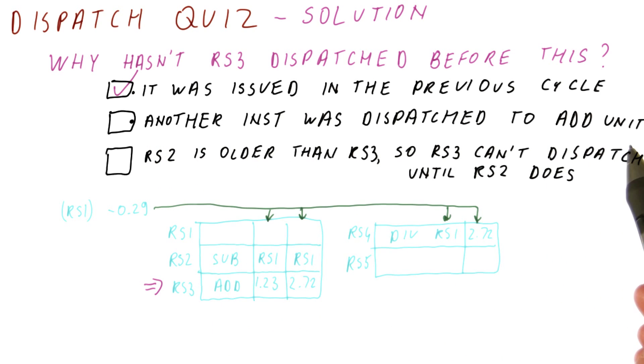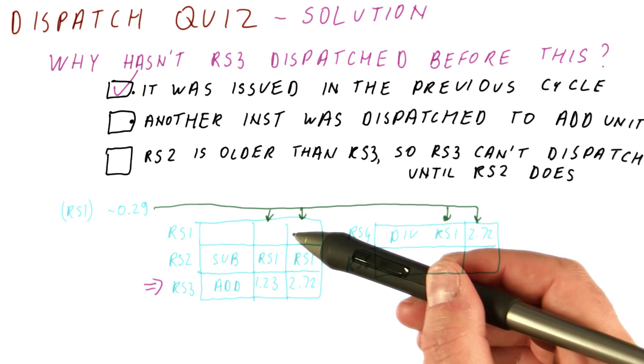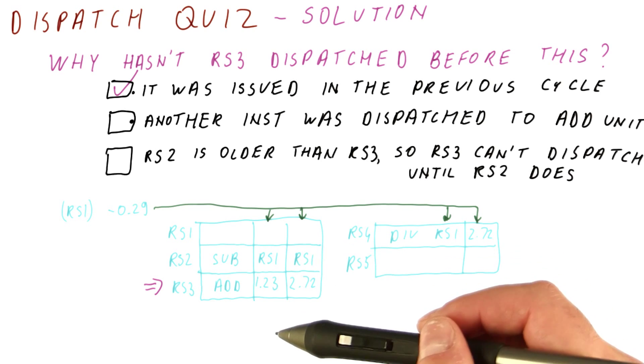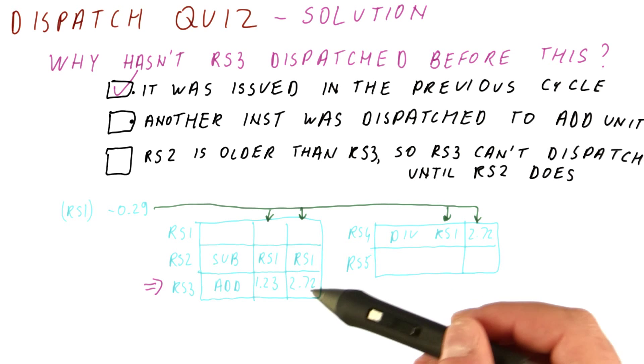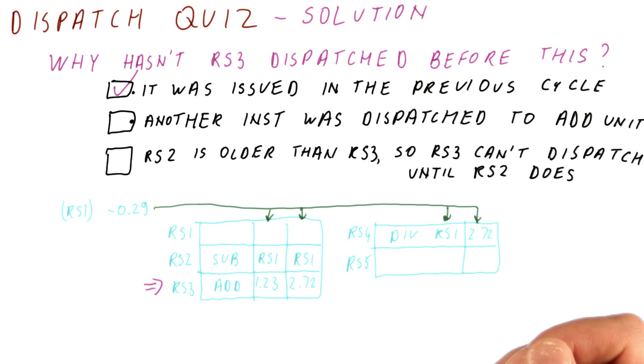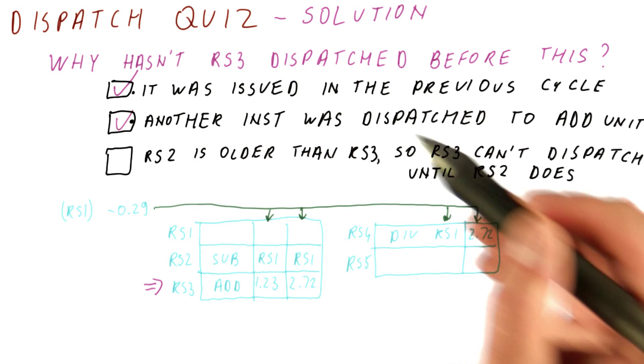Another instruction was dispatched to the add unit. This is entirely possible. If, for example, RS1 was sent in the previous cycle to the execution unit, then this instruction couldn't have because the unit can take only one instruction. So this is also possibly correct.